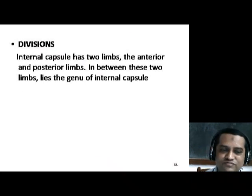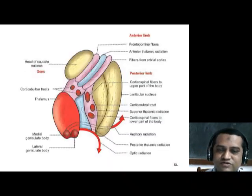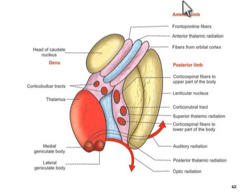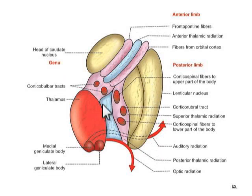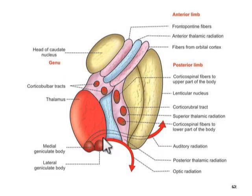The hypothalamus is a diencephalic structure. It is situated just below the thalamus in the ventral portion of the diencephalon. It is formed by many groups of nuclei which are scattered in the walls and floor of the third ventricle. The hypothalamus extends from the optic chiasma to the mammillary body.